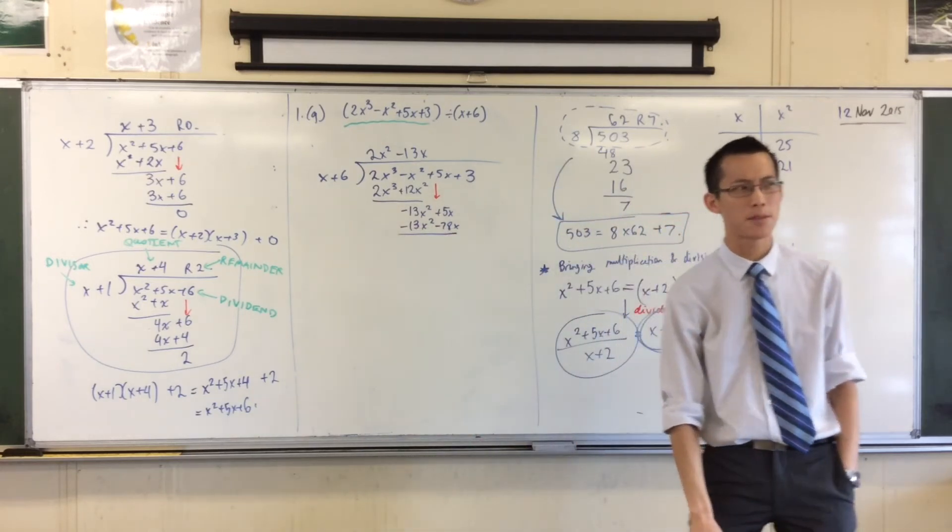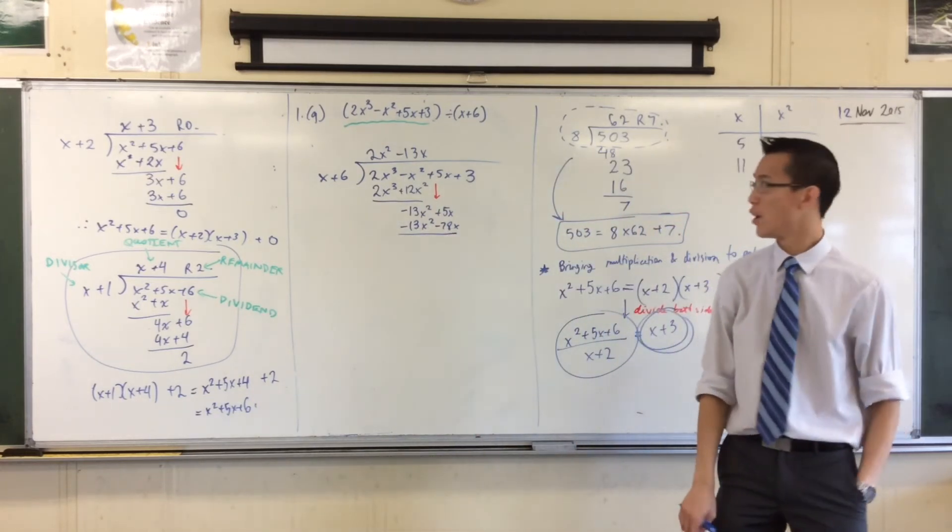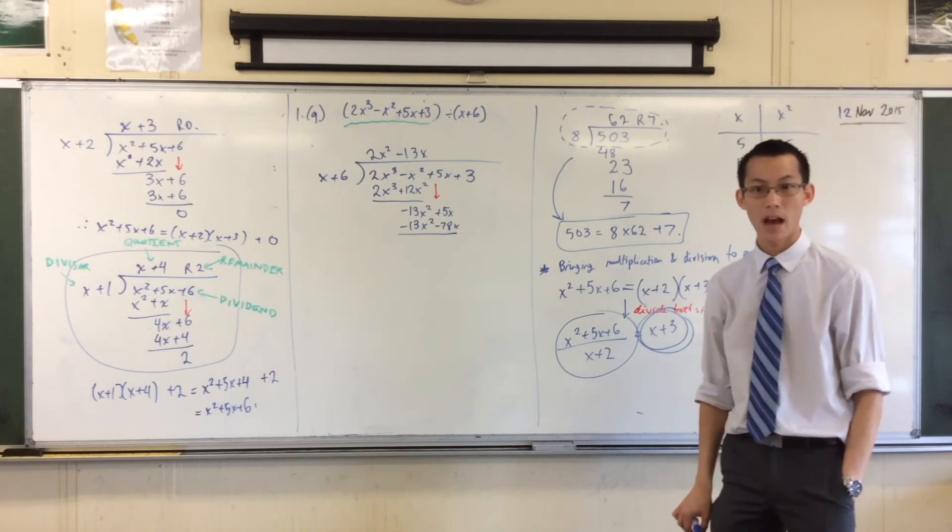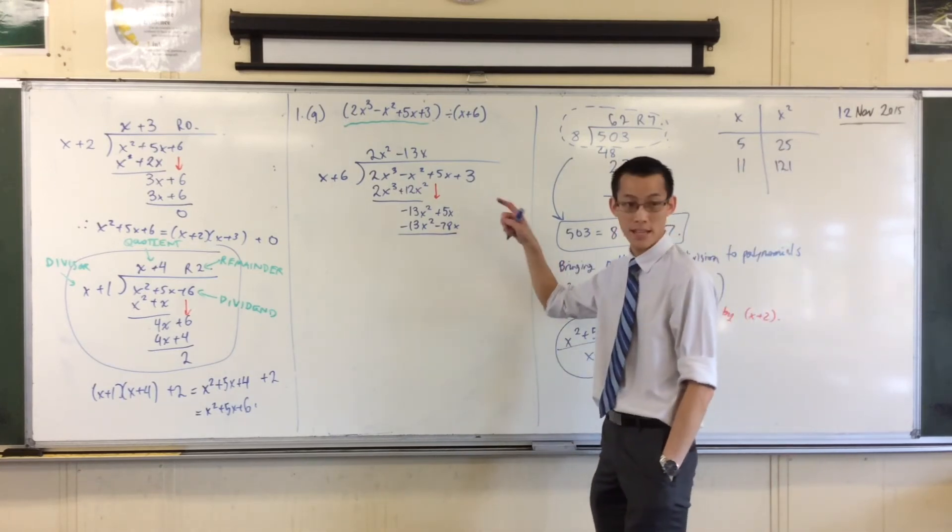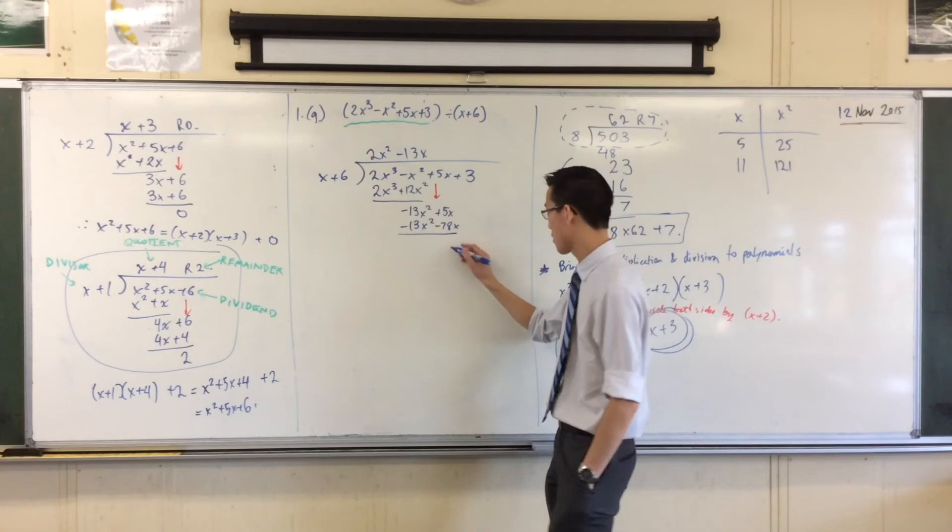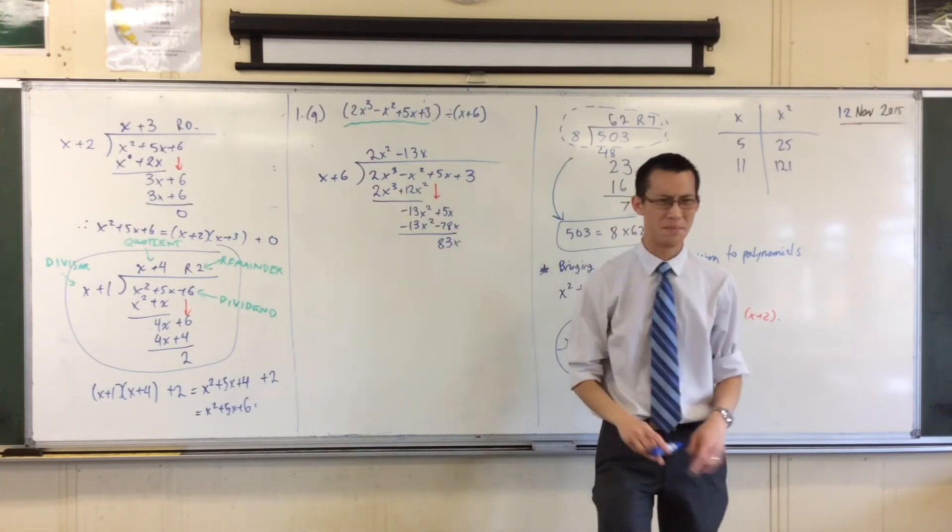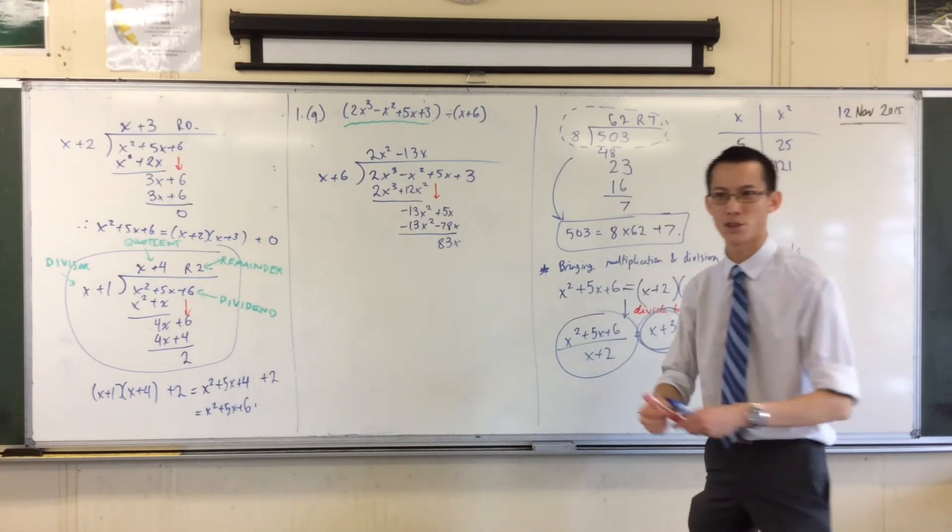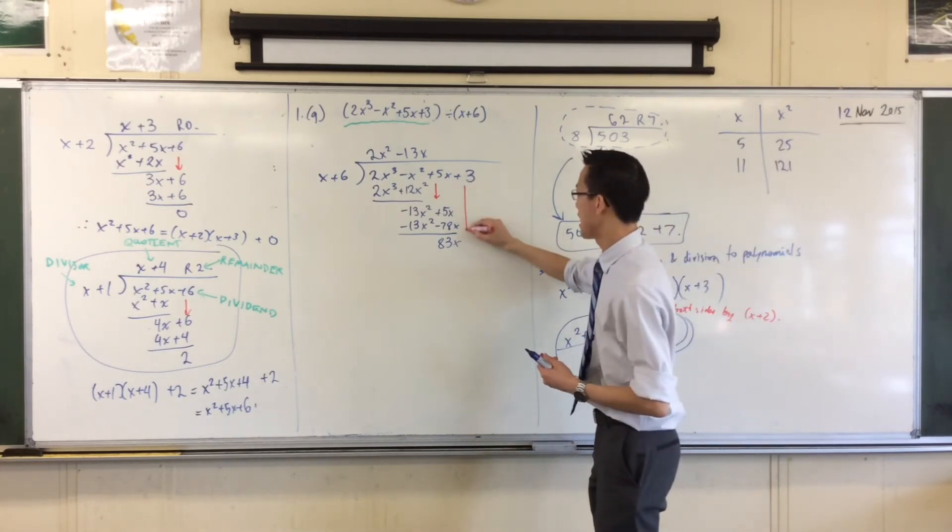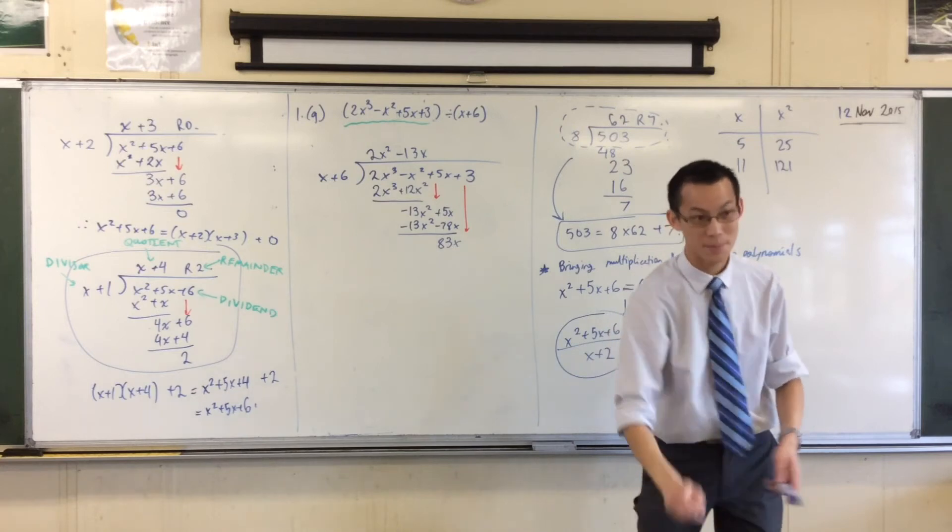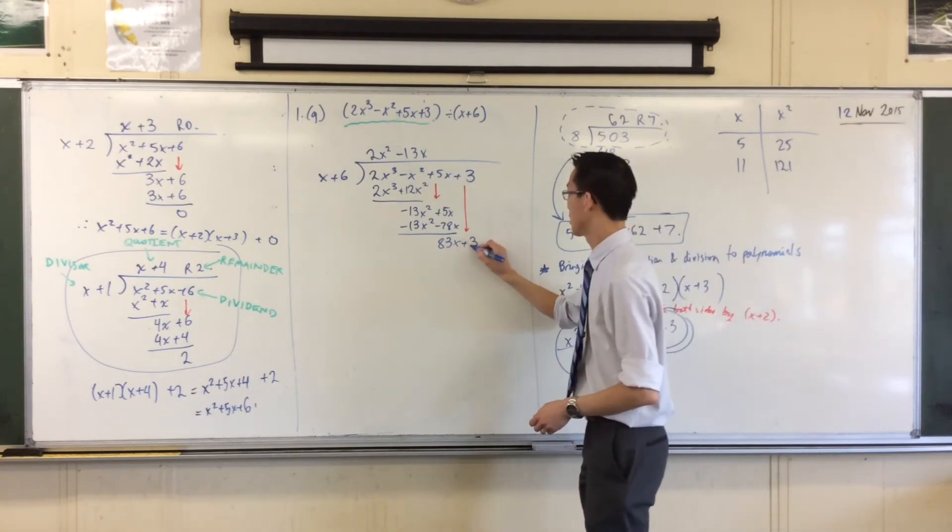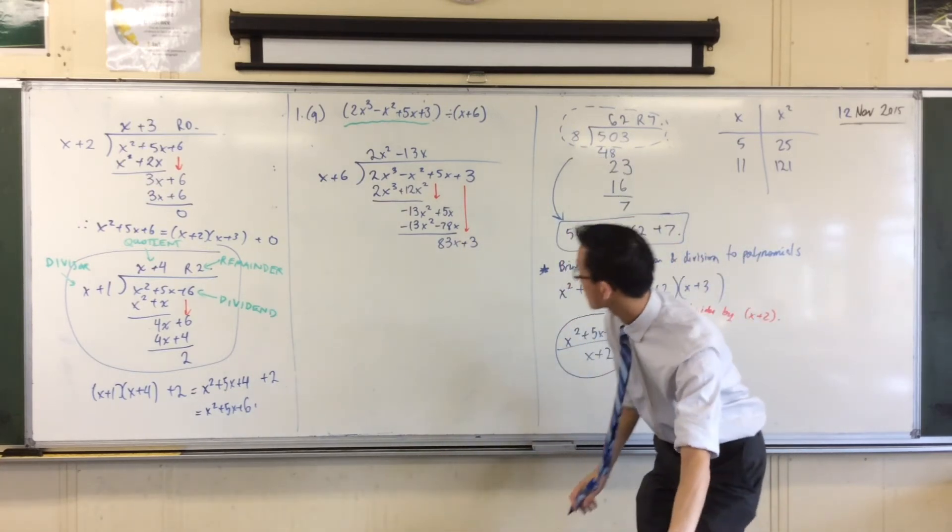Okay, now I'm doing subtraction. So, I'm subtracting a negative, which means I'm adding. So, 5 plus 78 is 83. There's a term hanging out on its own. It shouldn't be hanging out on its own. It's a bit lonely. What am I going to do? Bring down that plus 3. So it has a bit of a friend. Plus 3.